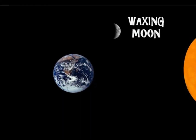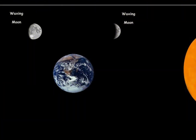The waxing moon. It's the second phase. Waxing means growing. After the new moon, the moon grows and grows — it gets bigger and bigger — and it will grow up to the full moon. It has the shape of the letter D.